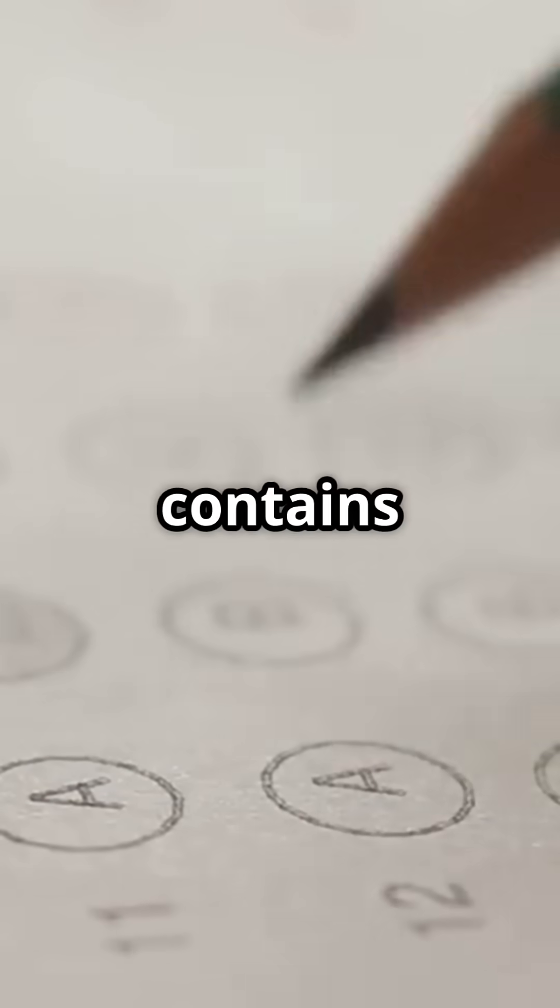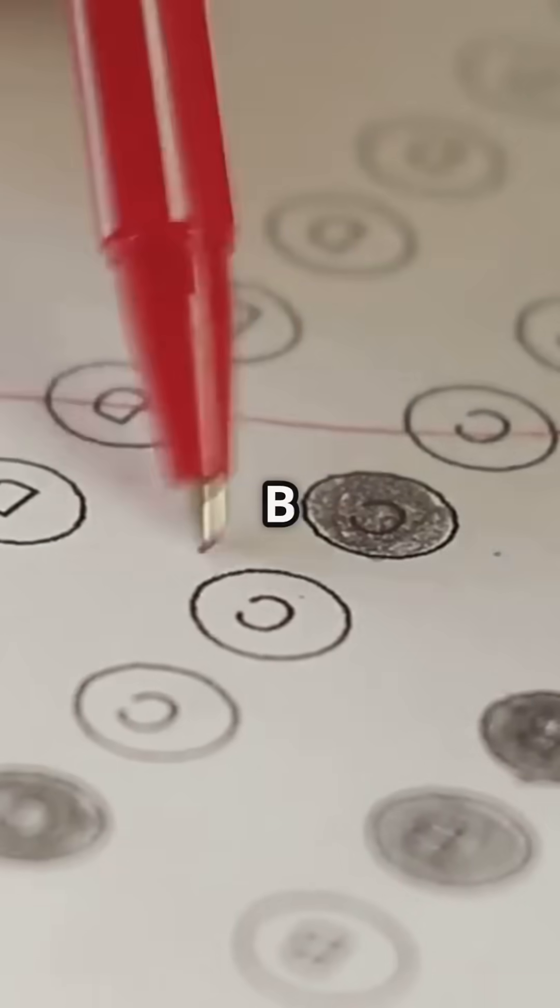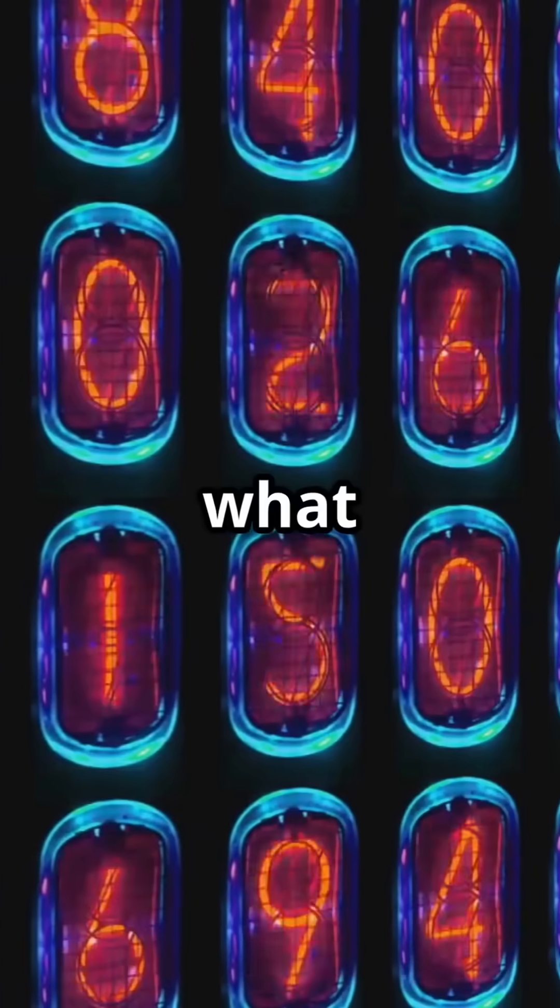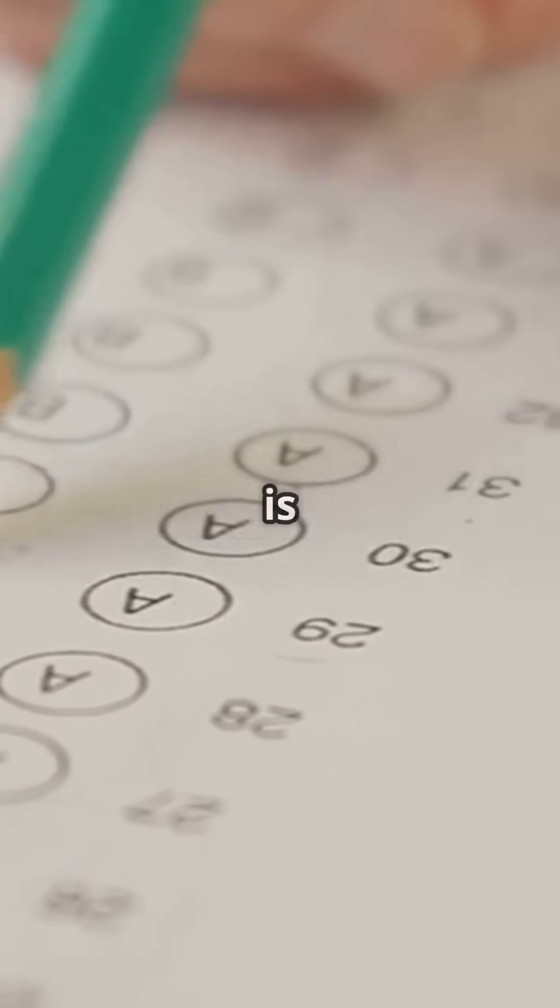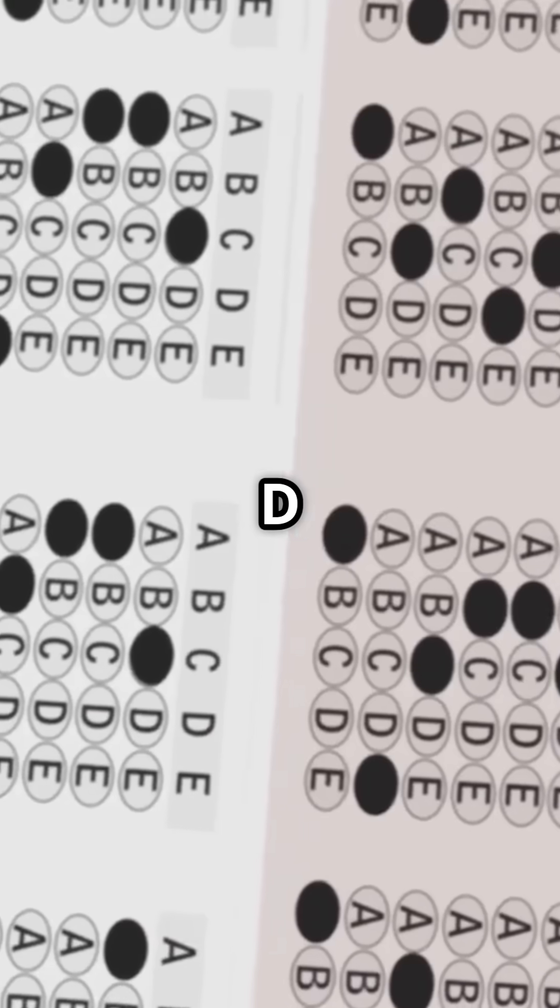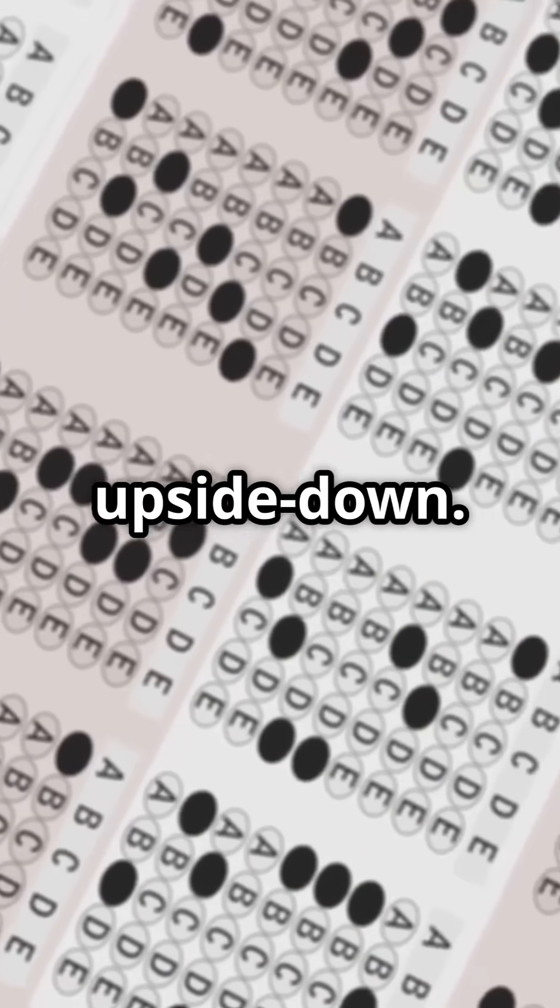Here are your options. Option A: The number contains a forbidden digit. Option B: The number is larger than what can be written with five digits. Option C: The number is an invalid mathematical sequence. Option D: The number is the same upside down.